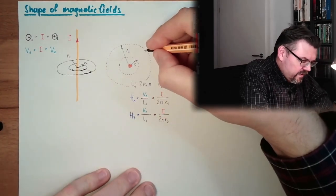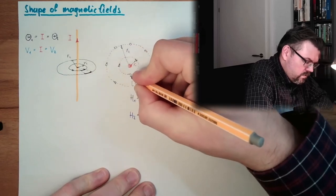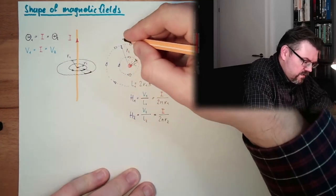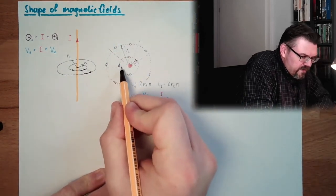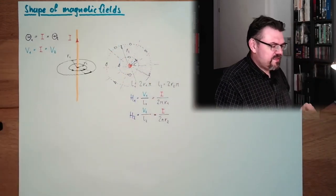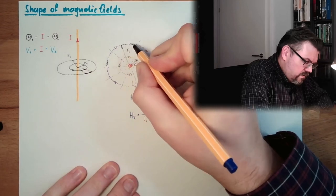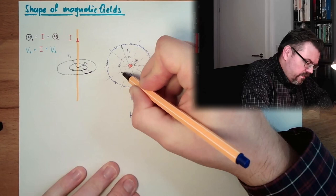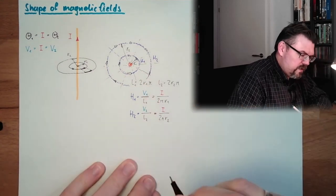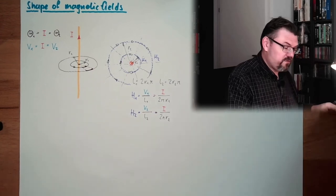Bringing this in: H1 = I / (2·π·R1), and H2 = I / (2·π·R2). The field is going in this direction. H1 and H2 show us: double the radius means half the field. Triple the radius means a third of the field. Four times the radius means a quarter of the field.